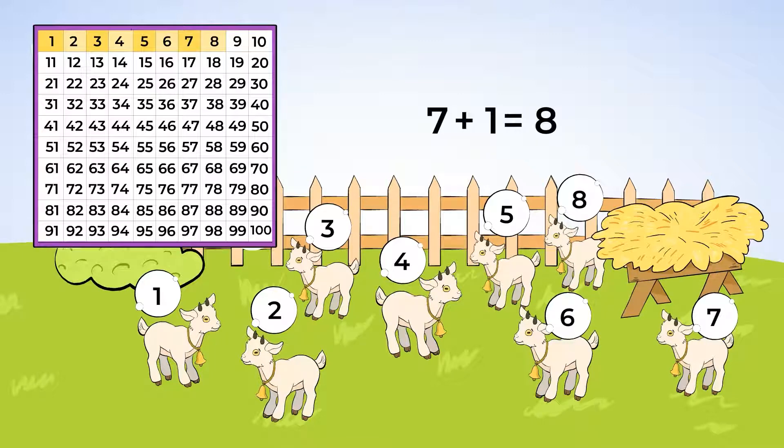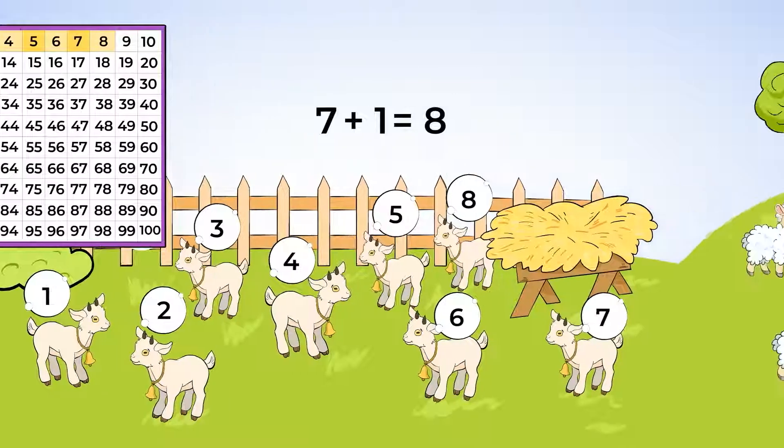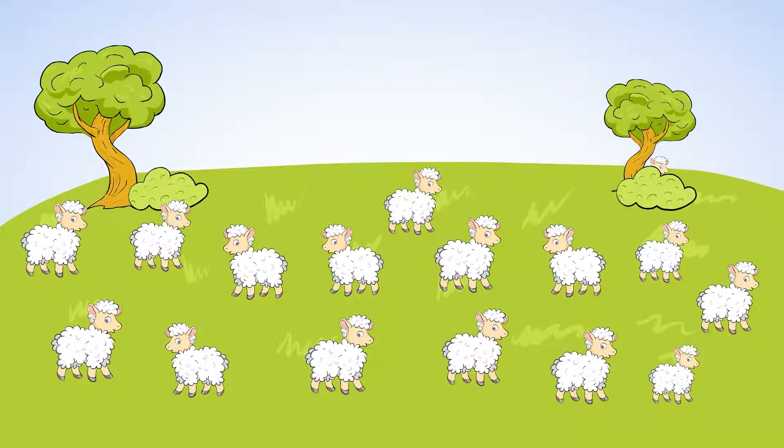First we counted to seven and then we counted one more and that's eight. There are eight goats. What other farm animals do you see?